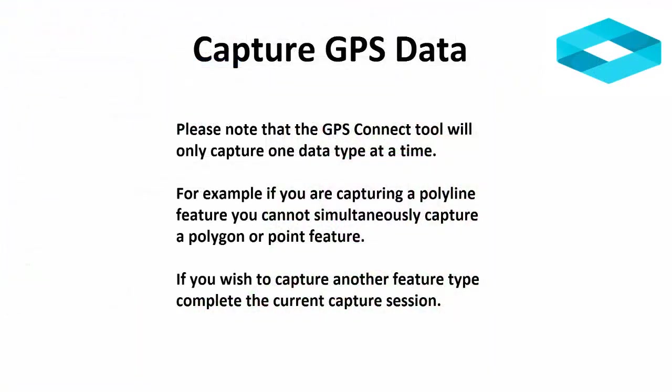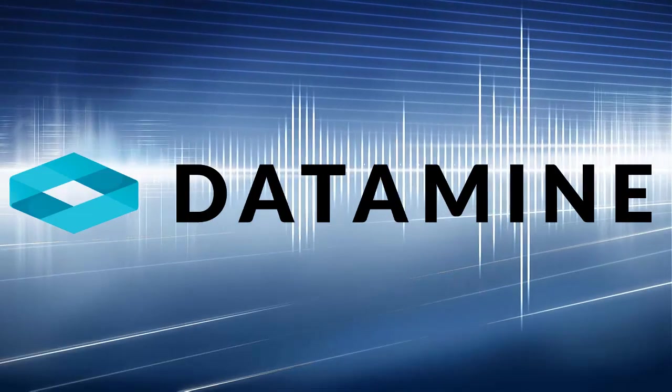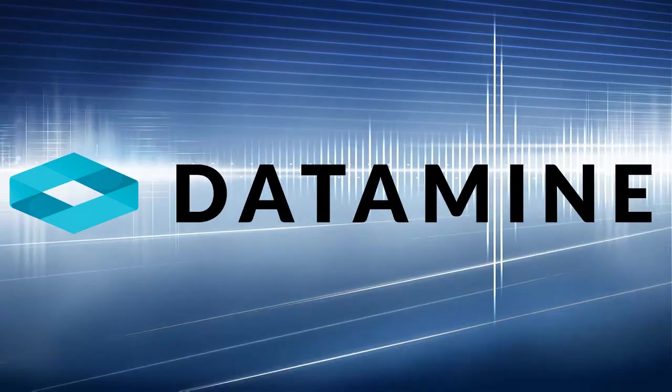Please note that when capturing GPS data, only one object type can be captured at a time. For example, you cannot capture a line feature, pause, then capture a point object, then resume the capture of the line object. Thank you for reviewing this video on how to capture GPS data.